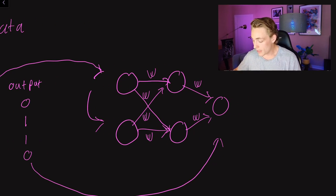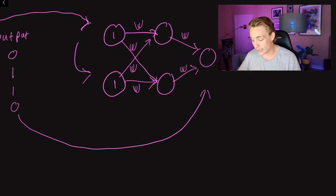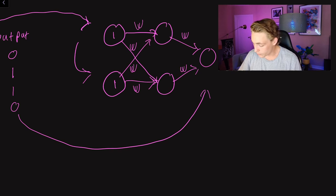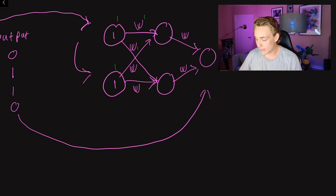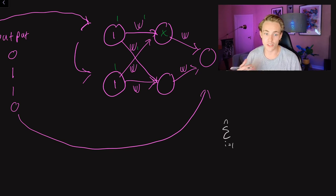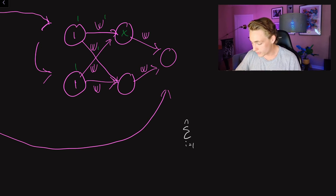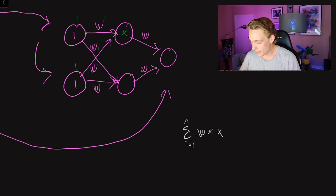When we do a forward pass, we will have values for the neurons. We take the neuron values, multiply them by the weights. For the two inputs, we multiply each with the corresponding weight, sum them up, and pass them through an activation function. The formula is: activation = sigmoid( sum from i=1 to n of weight_i * x_i ). We could also add a bias to this sum.